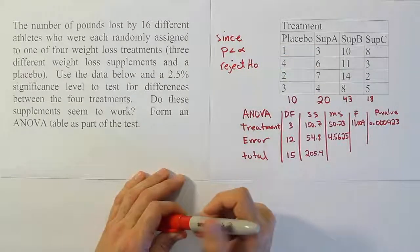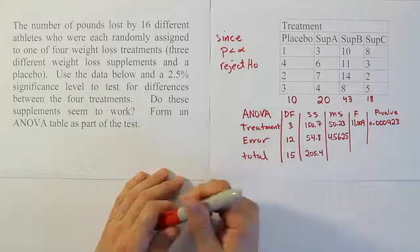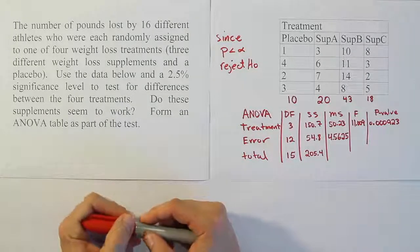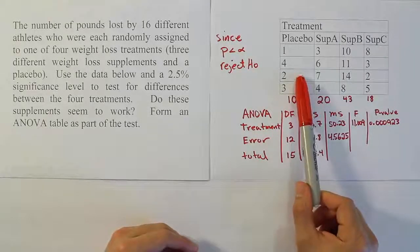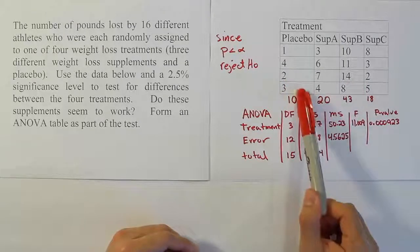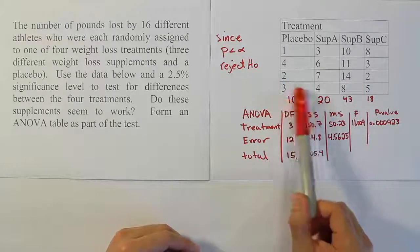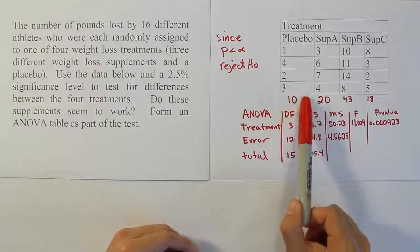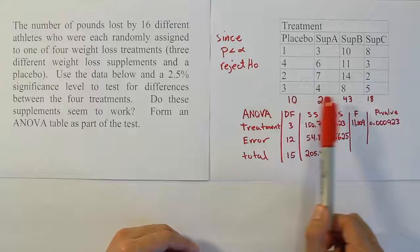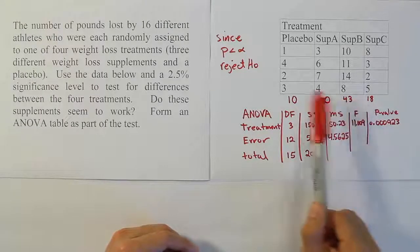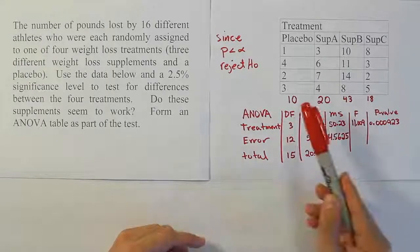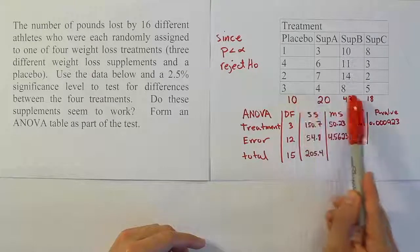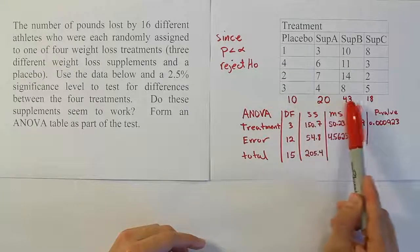Now if we're rejecting H0, we're supporting the idea that at least one of these treatments is different from the others — at least one of them is significantly different. The fact that they included a placebo in the trial, and we can tell that the placebo has the absolute lowest mean — if you divide the total by four you get the mean, but it has the absolute lowest treatment total. And then the highest treatment total is Supplement B.